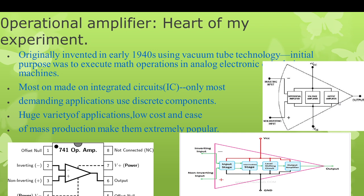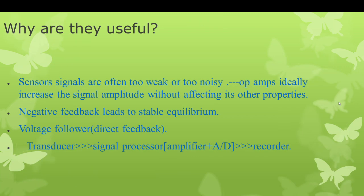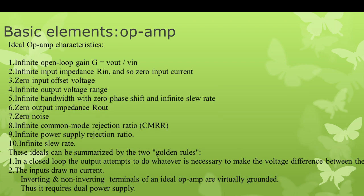Why are op-amps used? Sensor signals are often too weak and too noisy. The amplifier ideally increases the signal amplitude without affecting other signal properties. Negative feedback leads to stable equilibrium. The voltage follower uses direct feedback. The main signal chain goes from transducer to signal processor — which is the amplifier plus ADC (analog-to-digital converter) — and then to recorder.